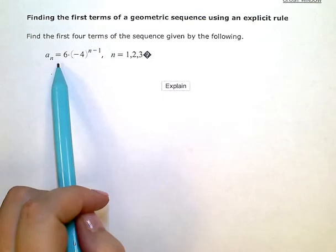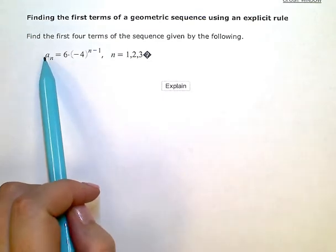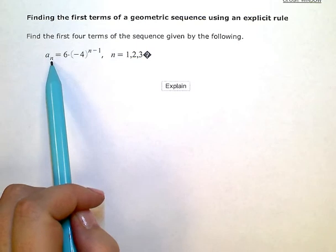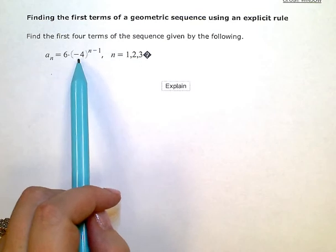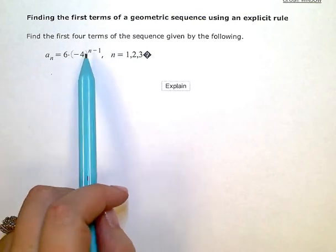I have an explicit formula here. It's telling me that I can find the value of any term number in my sequence by starting with 6 and then multiplying by negative 4 as many times as I need to.